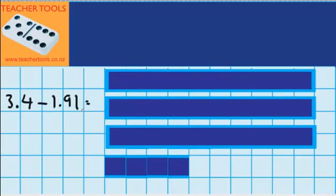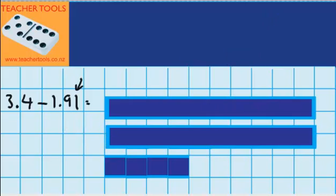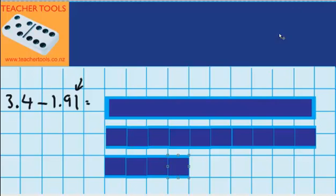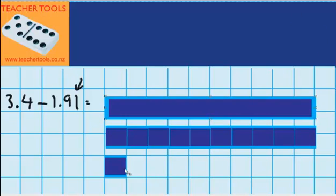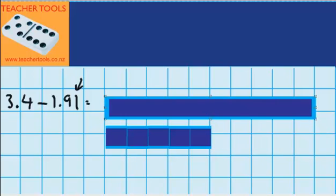Now let's try a question with hundredths. This question is almost exactly the same — I still have 3.4 chocolate bars, but this time I give 1.91, so I'm also giving away some hundredths. First I'm going to take away one whole chocolate bar, then take away my 9 tenths. Just like last time, I don't have enough tenths, so I'm going to split one of these wholes into tenths — now there are 10 there. I'll take away these 4 and 5 from up here. So we've taken away one whole and 9 tenths. Now I need to take away my hundredths, but there are no hundredths, so I'm going to take one of these tenths and split it into hundredths. I'll cross that one out and split it into 10 hundredths.